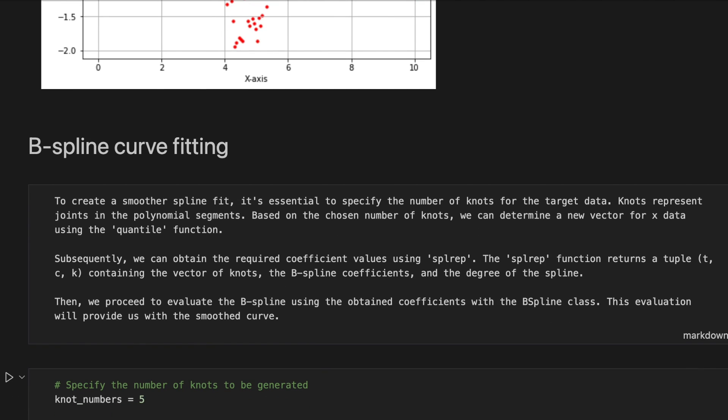To create a smoother spline fit, it's essential to specify the number of nodes for this target data. Nodes represent joints in the polynomial segments. Based on the chosen number of nodes, we can determine a new vector for x data using the quantile function.